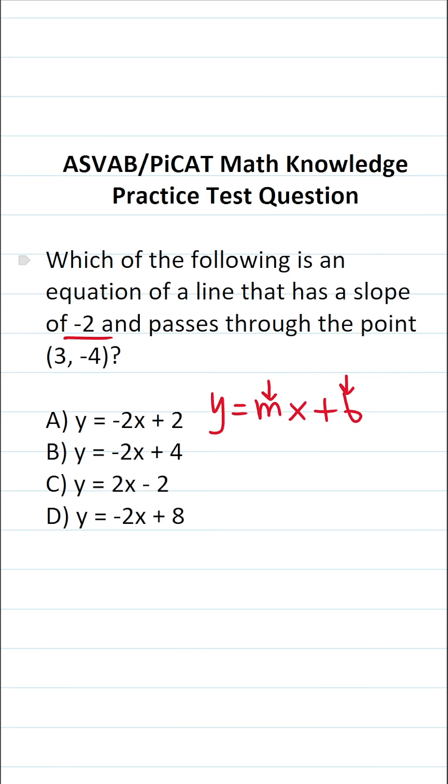According to this problem, our equation of the line is going to have a slope of negative 2, so we know m is going to be negative 2. That said, we're only given one of the points on the line, that is (3, -4).